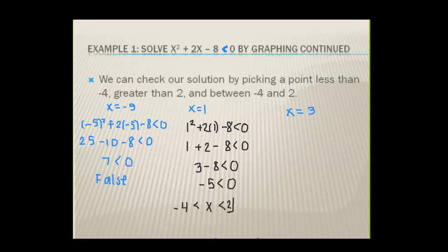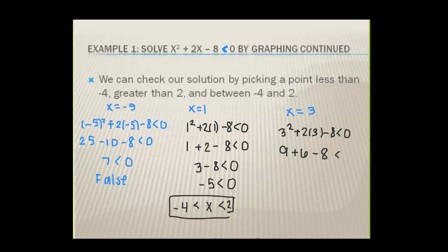To confirm, we check x equals three: three squared plus two times three minus eight — because there are cases where it could be positive on other intervals if this were a polynomial. Three squared is nine, two times three is six, minus eight. Nine plus six is fifteen, fifteen minus eight is seven — again seven is not less than zero. Therefore that side is also false. We can confirm algebraically what we confirmed yesterday graphically.